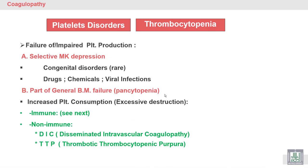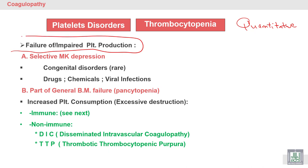Platelet disorders — we will discuss quantitative platelet disorder thrombocytopenia. Thrombocytopenia is a quantitative disorder; it is a decrease in the platelet count or platelet concentration due to failure or impaired platelet production.